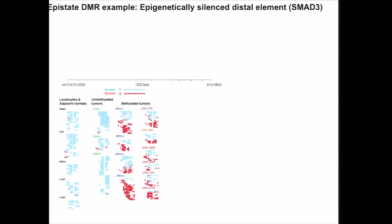The last example shows an advantage of the sequencing approach over the array approach: we found a high number of DMR loci located at distal elements. Here, one example is a 300 base pair locus with two epistates. We found no methylated epistate in leukocytes, adjacent normals, or some tumors like colon, but we found the methylated epistate at different frequencies in other tumors, for example breast and endometrial samples.